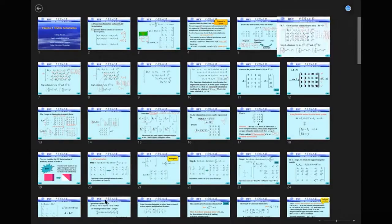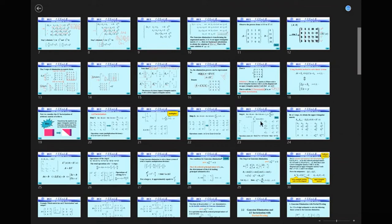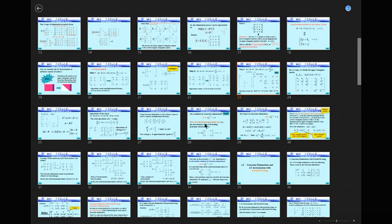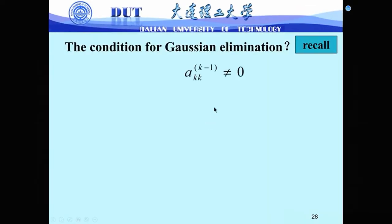For the general case at step k, we also need to consider the denominator aₖₖ⁽ᵏ⁻¹⁾. We don't know this number in the original matrix — we have to use k−1 steps of Gaussian elimination to obtain it. We call this number the pivot, because it is very important. So how do we obtain the pivot?